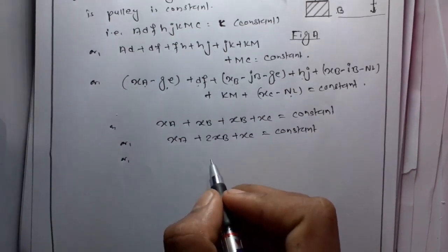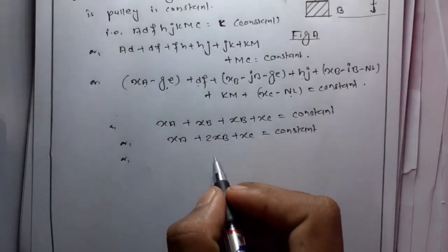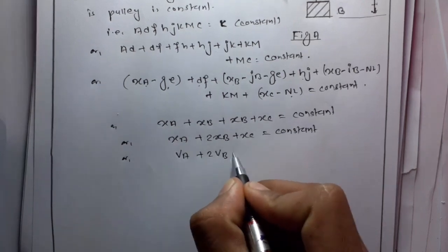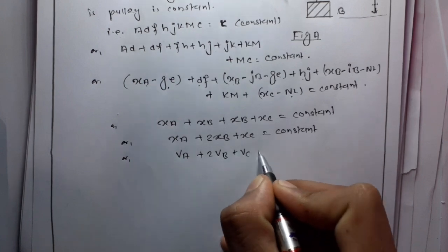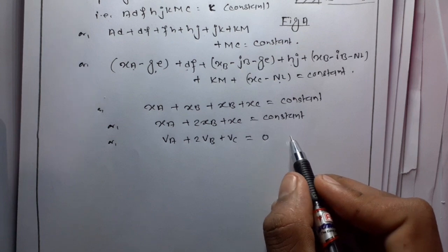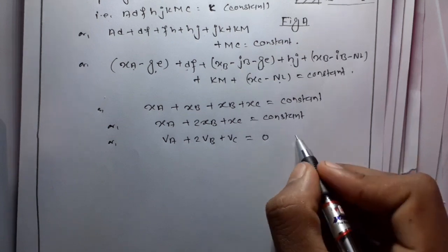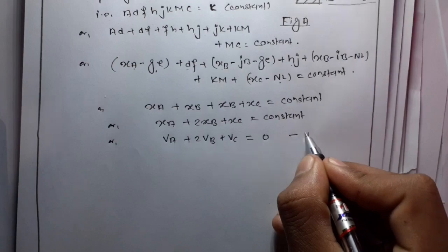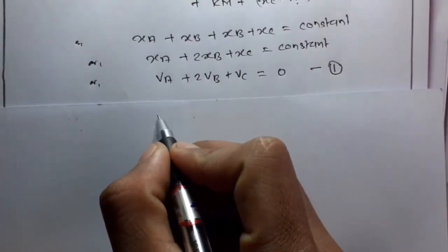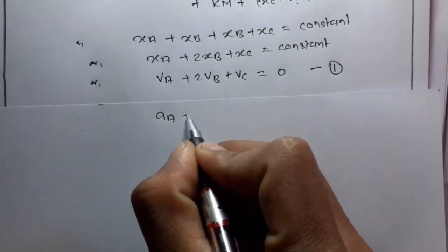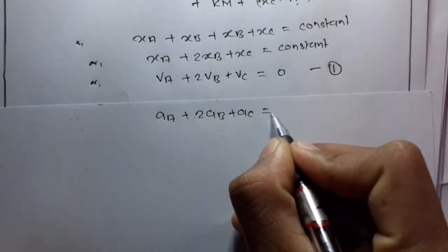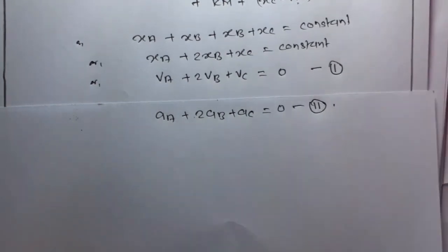Now differentiating both sides with respect to time, we get VA + 2VB + VC = 0, because the derivative of a constant is 0. This will be equation number 1. Now differentiating equation 1 again with respect to time, we get AA + 2AB + AC = 0. This is equation number 2.